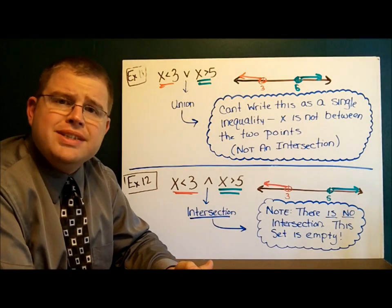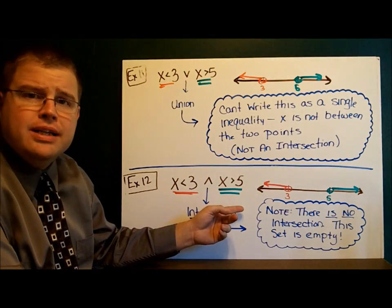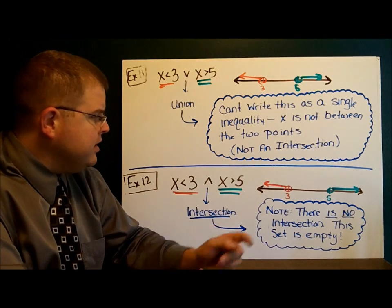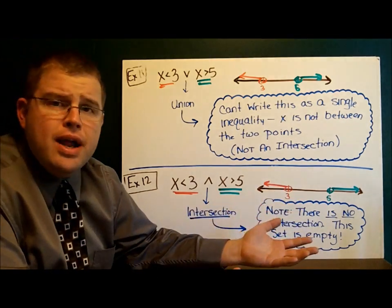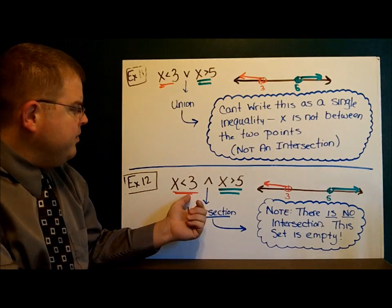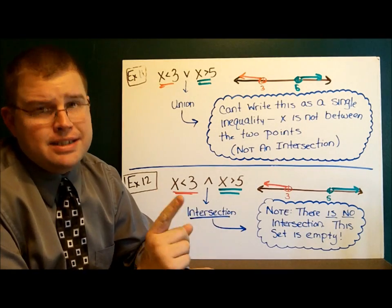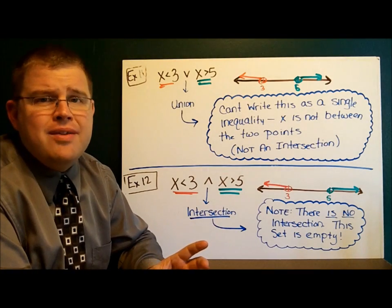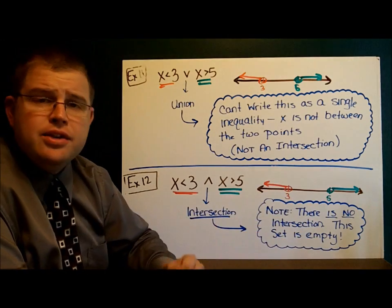The last thing I want to show you is that sometimes an intersection is really nothing. Take a look at these two inequalities: x is less than 3, x is greater than 5 — we want the intersection. I've shaded each one, and the intersection is the area they have in common. There is no area in common; there is no intersection. The set is actually empty. There's nothing that meets both criteria. Can you come up with any number that is both less than 3 and greater than 5 at the same time? So in this case, there is no intersection.